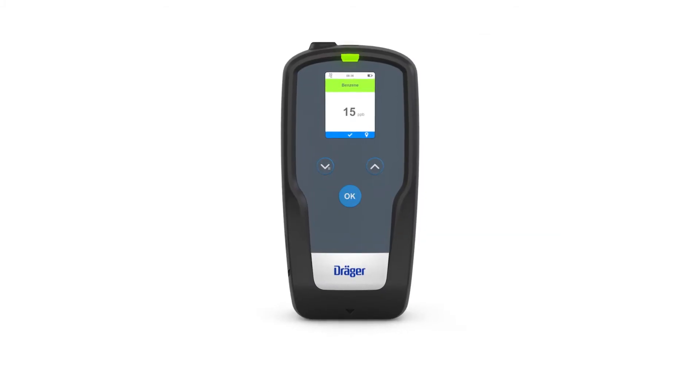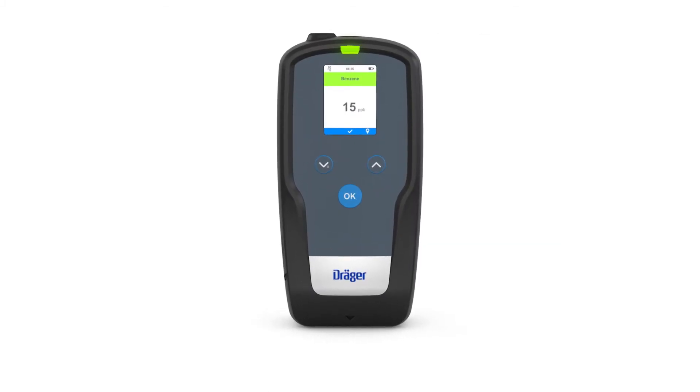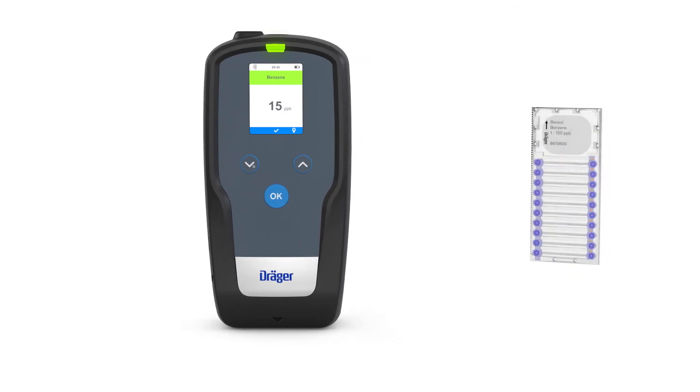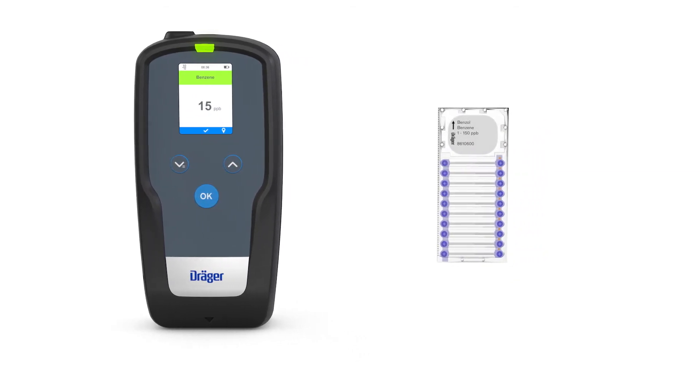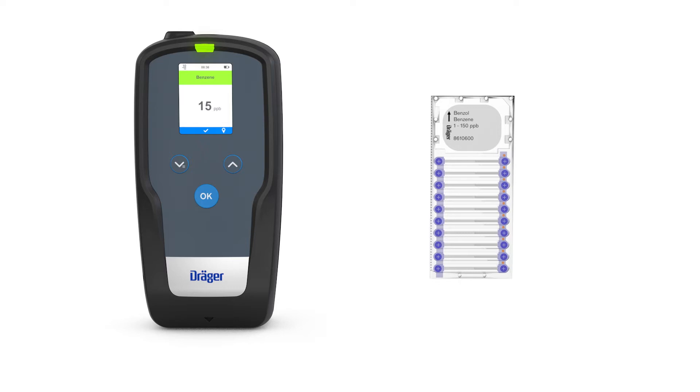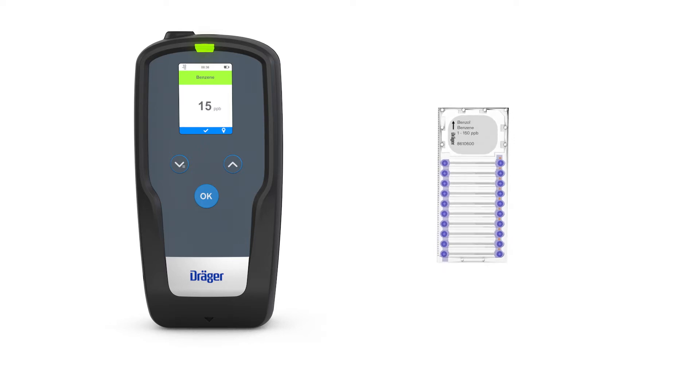The system consists of the EXACT 7000 analysis device and a range of microtubes for various gases and vapors. A single microtube can be used to perform 10 tests in a row. The system is continually being expanded to include testing for even more types of gases.